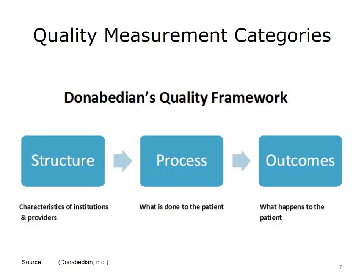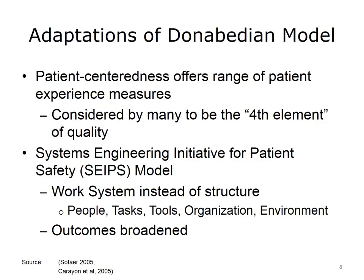Measures can be grouped into one of three categories: structure, process, and outcomes. Structure refers to characteristics of institutions and providers. Process is what is done to the patient, and outcomes are what happens to the patient. Structure influences process, which in turn affects outcomes. These classifications were originally coined in 1966 by physician researcher Avedis Donabedian. The Donabedian framework has evolved over time and is applied to healthcare systems to measure overall quality and inform strategic quality improvement planning.